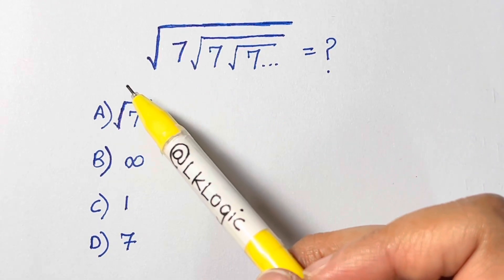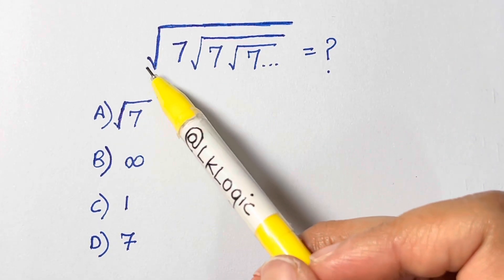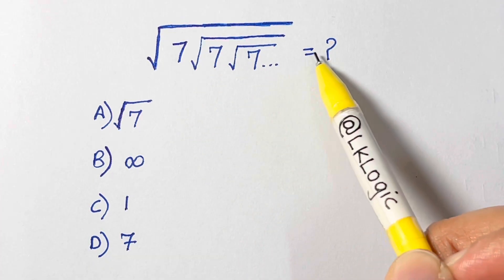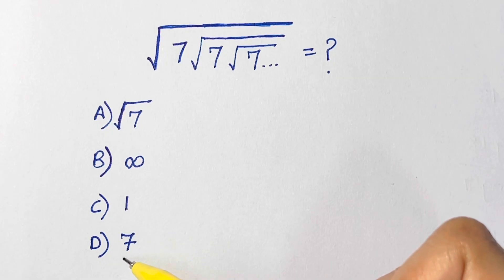Hi guys, we have a nice radical problem here which is under root of 7, under root of 7, under root of 7, times infinity is equal to what? You have four choices: either root 7, infinity, 1, or 7.